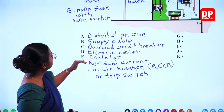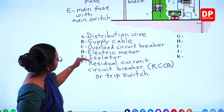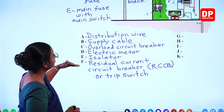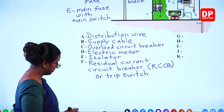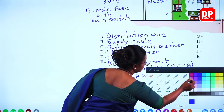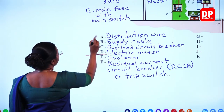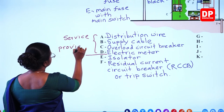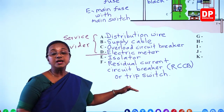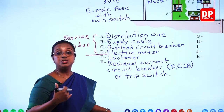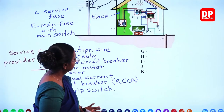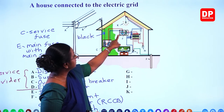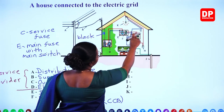The distribution wire, supply cable, and components C (overload circuit breaker or service fuse) and D (electric meter) all belong to the service provider. From the isolator onwards, all components belong to the consumer. From the trip switch, you can see the live wire and neutral wire connections.